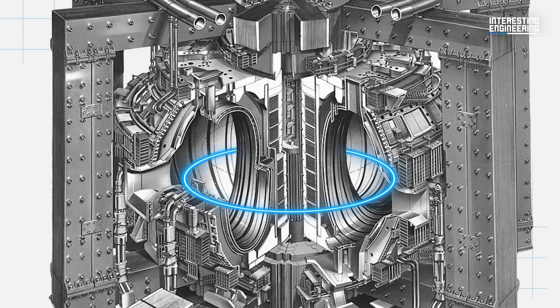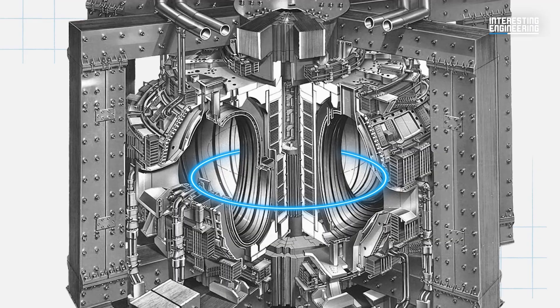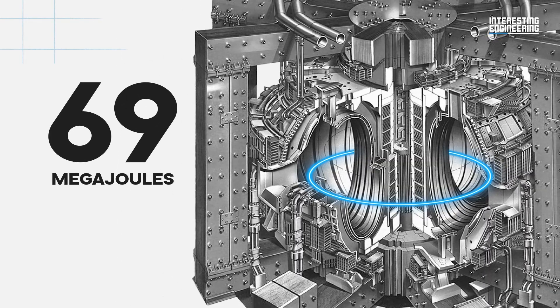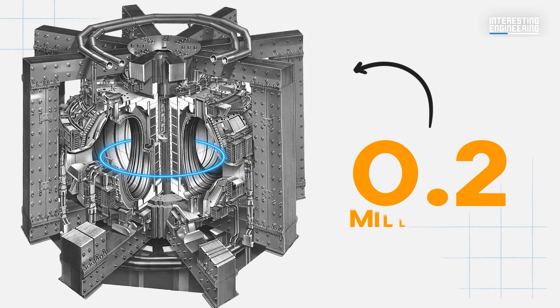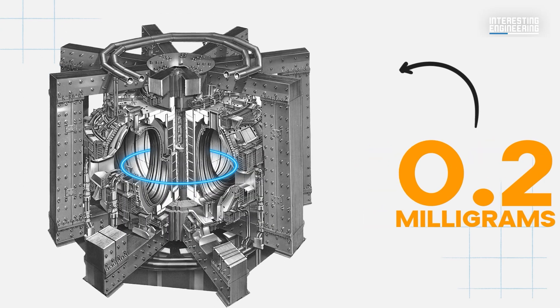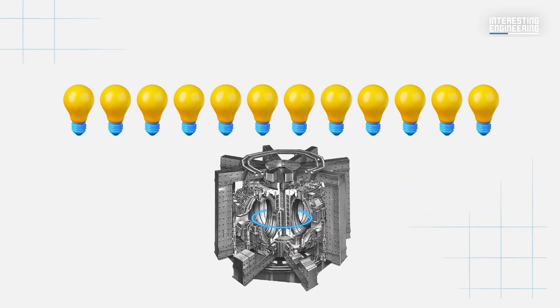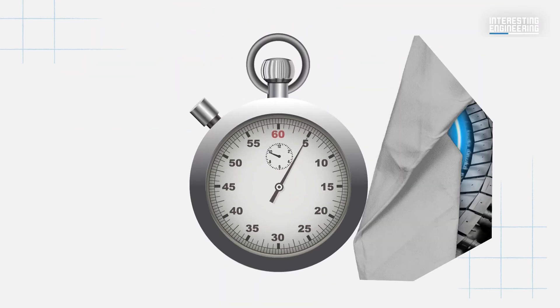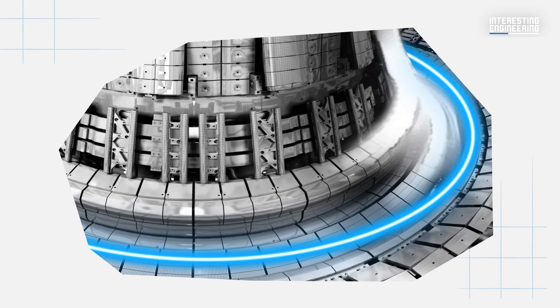Earlier this year, the JET facility reached another record of generating 69 megajoules of energy by burning just 0.2 milligrams of fuel. Not only would this energy be sufficient to power 12,000 homes and was generated in just 5 seconds, demonstrating the potential of fusion energy.